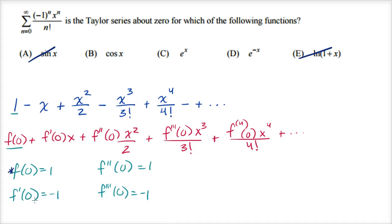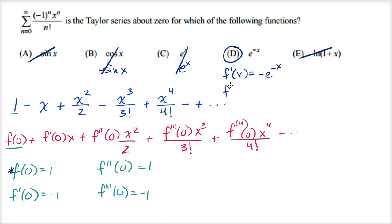Now checking the first derivative constraint — f'(0) must be negative one. The derivative of cosine is negative sine; evaluated at zero that's zero, not negative one — ruled out. The derivative of e^x is e^x; at zero that's one, not negative one — ruled out. For e^(-x), the first derivative is negative e^(-x), so f'(0) is negative e^0, which is negative one. That matches, so the answer is e^(-x).